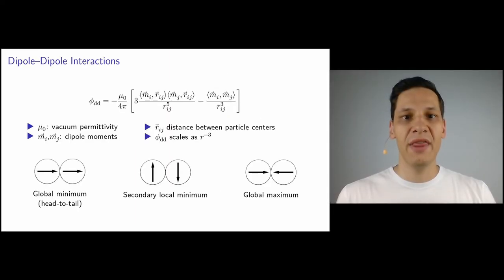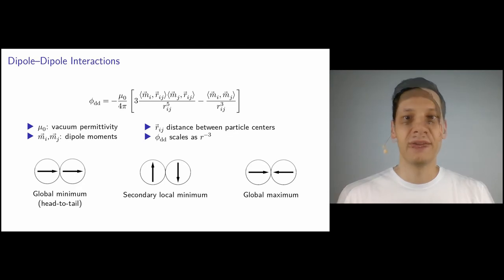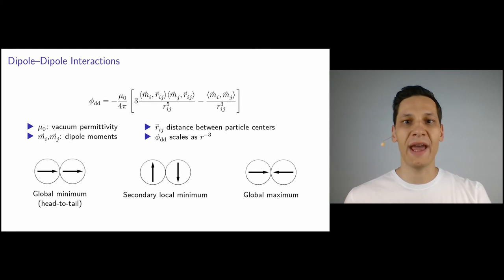Let's have a look at the extrema of this potential. They all occur when two particles touch and depend on the relative orientation of the dipole moments. The global minimum is found in the so-called head-to-tail configuration, which is when the two dipole moments are co-aligned on one axis and point into the same direction. A secondary local minimum is found for parallel orientation of the dipoles pointing into opposing directions. And finally there is the global maximum, which is the head-to-head or tail-to-tail configuration: co-aligned dipole moments on one axis but such that either the heads or the tails touch.